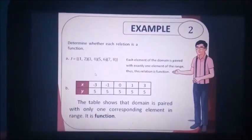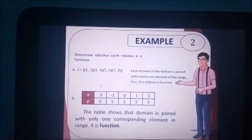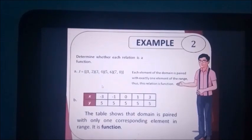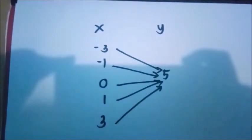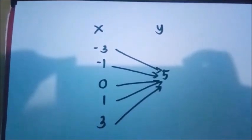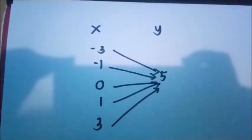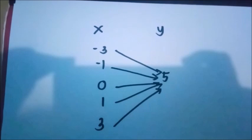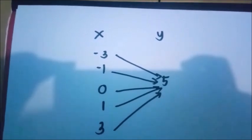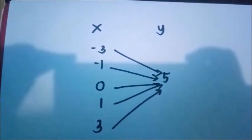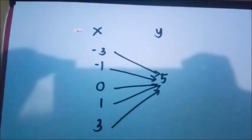In letter B, in X we have negative 3, negative 1, 0, 1, 3. And Y is 5, 5, 5, 5, 5. By the use of a mapping diagram, in the given example, we paired all elements in the domain exactly to one element in the range. It means this example is a function.